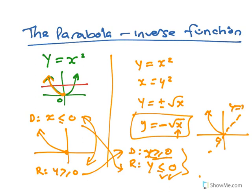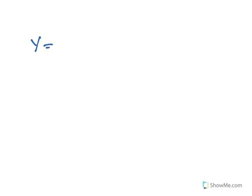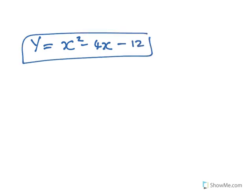If you draw the line y equals x, it's just a reflection of that curve in the line y equals x. So it's y equals minus root x, which is that one. Now we're going to look at where you have to complete the square to actually find the inverse, and we are going to restrict the domain.